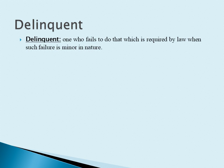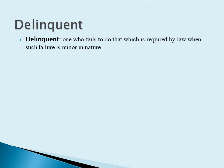Delinquent means one who fails to do that which is required by law or by duty when such failure is minor in nature. A delinquent is often used to refer to a juvenile who commits a minor criminal act — known as a juvenile delinquent.